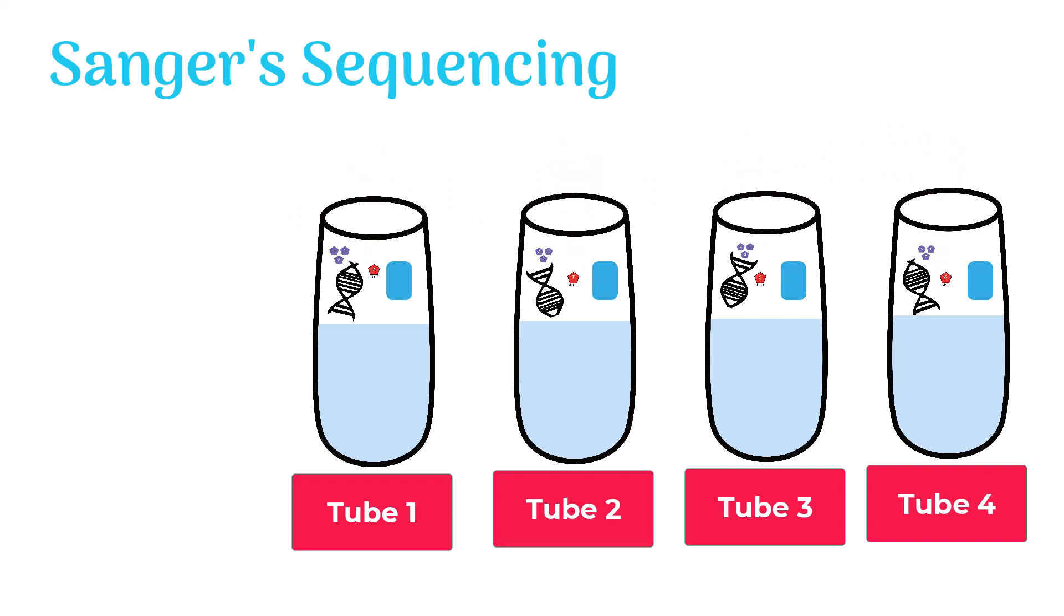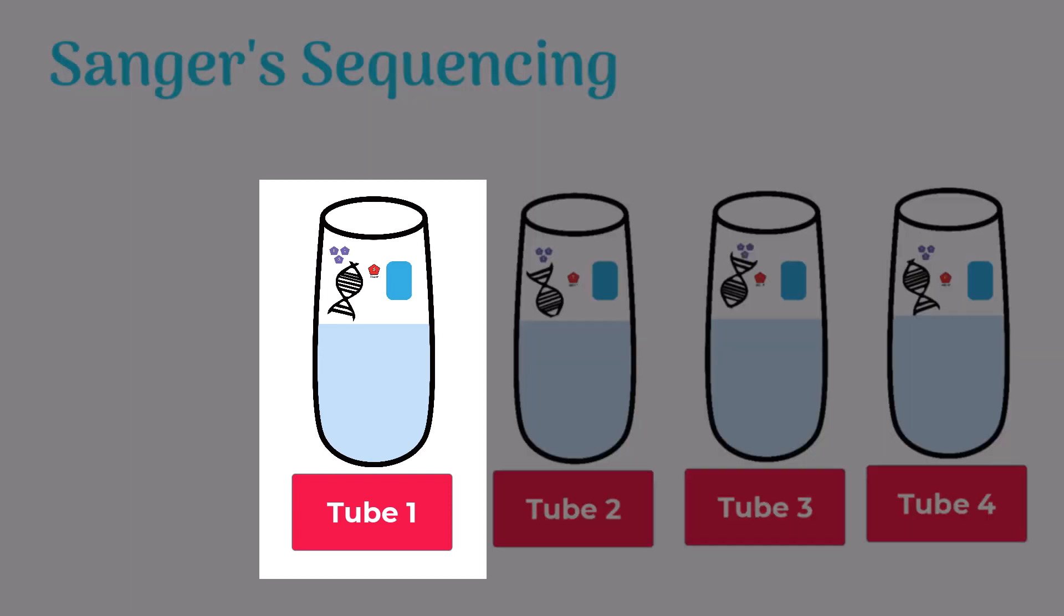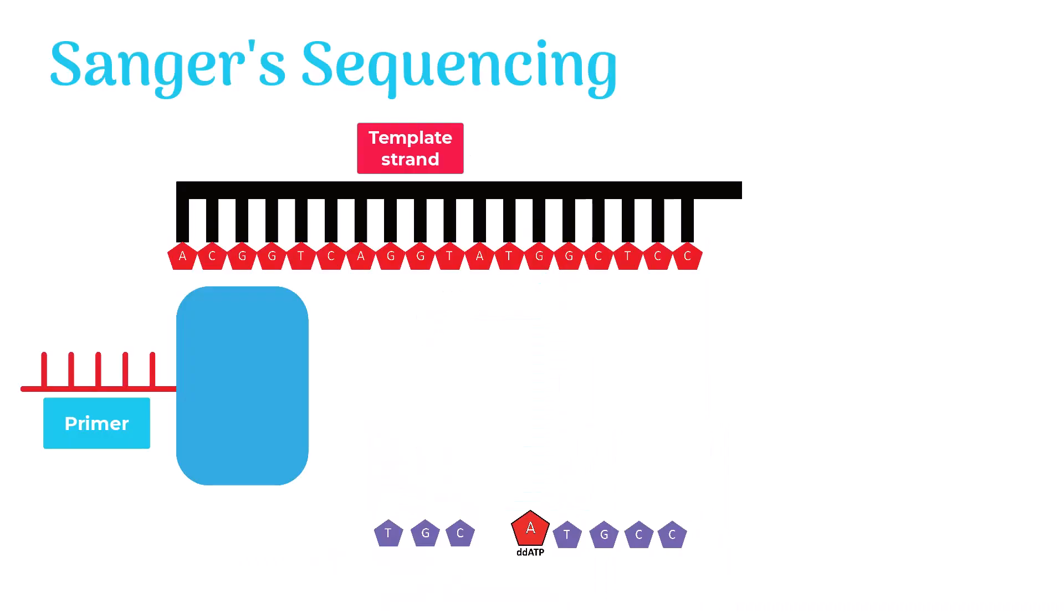Clones of the target DNA segments are made in Sanger sequencing. Let's see what happens inside the tube. Inside the tube, DNA polymerase starts forging the new strand by using the template DNA strand as a reference.